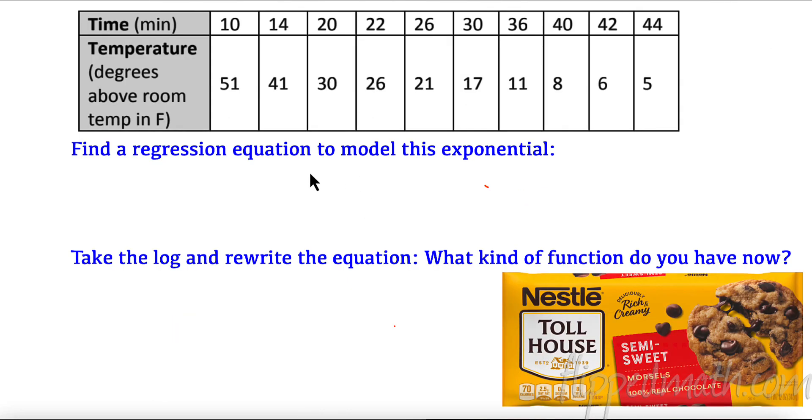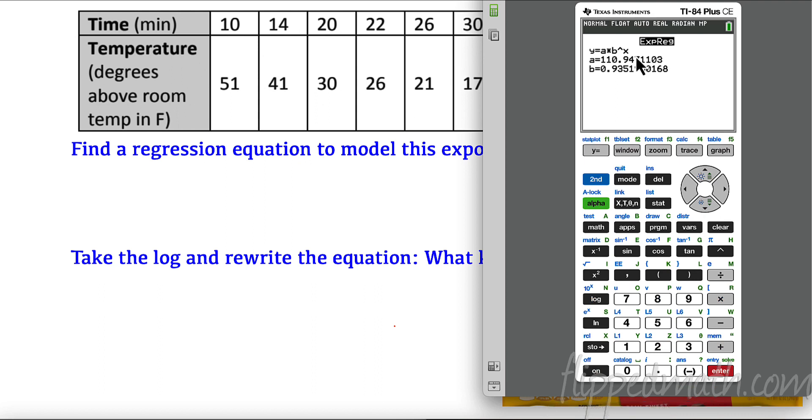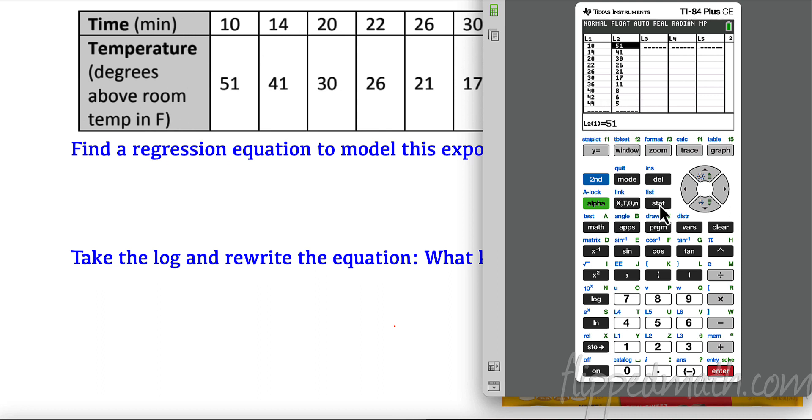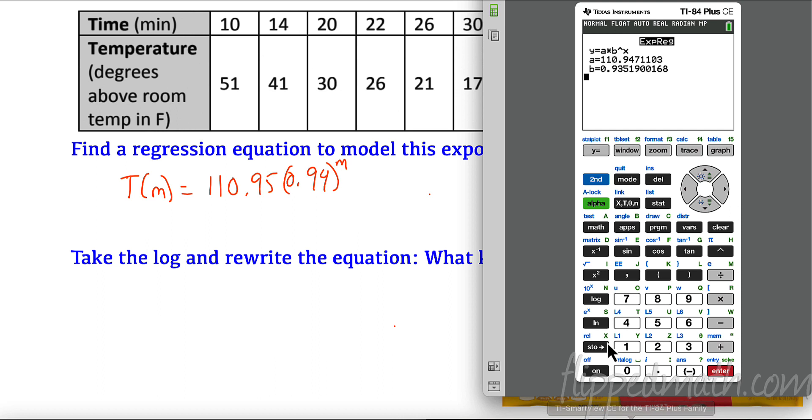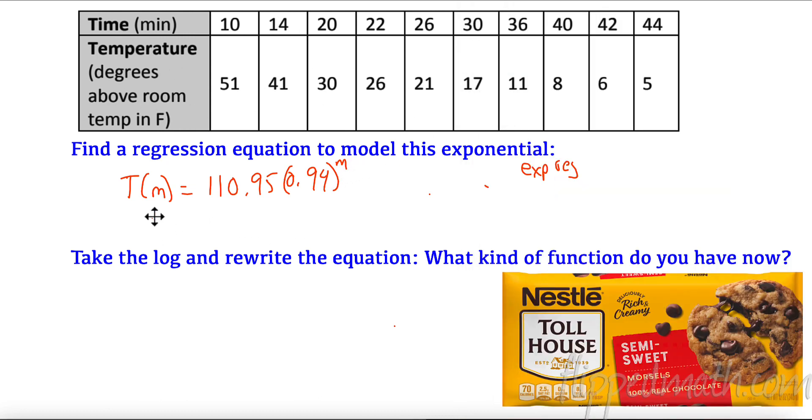So what I want you to do is find the regression equation to model this exponential. Now again, this is going to be exp regression. Don't forget when you do that, you want to go in and edit. You have your two lists, your x's and your y's, and when you calculate it's going to be exp regression, exponential regression. Go ahead, pause your video and do that now. So this is what I found: my a times b to the x, I rounded to 110.95 and 0.94.